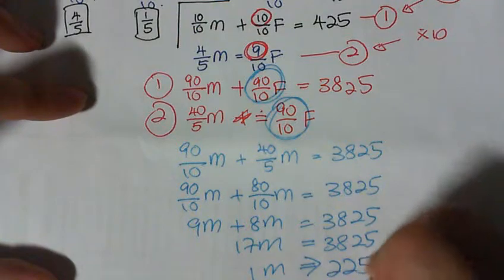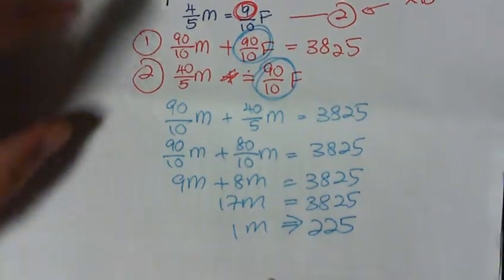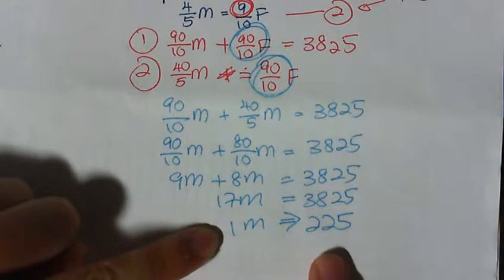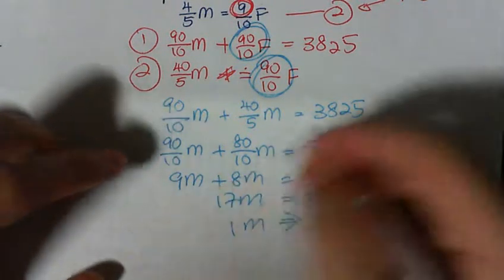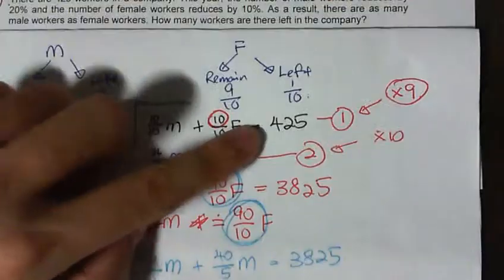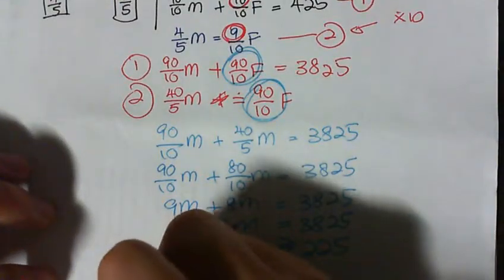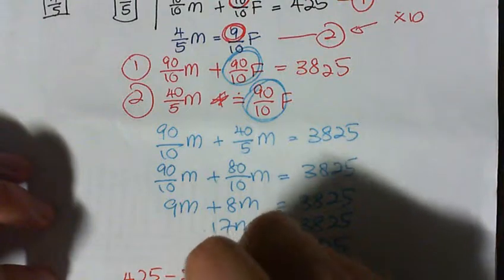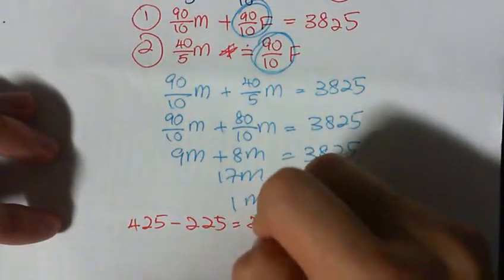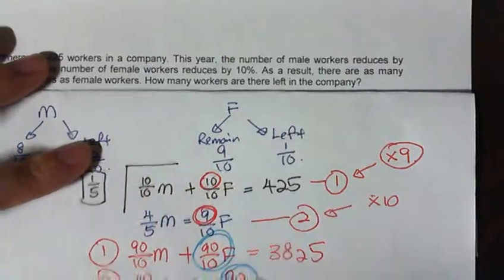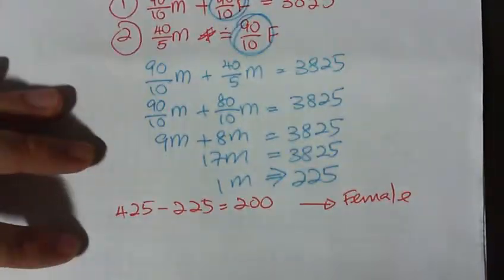So 1 male, as in the total number of male, is actually 225. Now if male is 225, female must be 425 minus 225 equal to 200. So 200 is female.